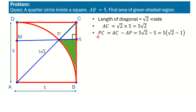Now we want to find the length of PC. We know the total diagonal AC equals 5 root 2. If we subtract AP, we get PC: PC = AC − AP. The side of the square is also the radius of the quarter circle, so the radius AP equals 5 units. Therefore PC = 5 root 2 − 5 = 5(root 2 − 1).